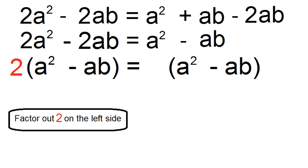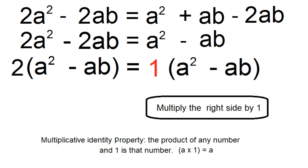Factor a 2 out of the left side of the equation. Multiply the right side by 1. The multiplicative identity property allows this. The product of any number and 1 is that number.